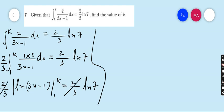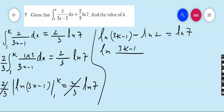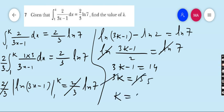2 upon 3 cancel back. Apply the limit: ln 3k minus 1 minus ln 2 is equal to ln 7. Apply the rule of logarithm, convert subtraction into division, so it is ln (3k minus 1 upon 2) equals ln 7. ln cancel by ln, 3k minus 1 equals 14, 3k equals 15, so k is equal to 5. This is our final answer, k equals 5. Now move to question number 8.